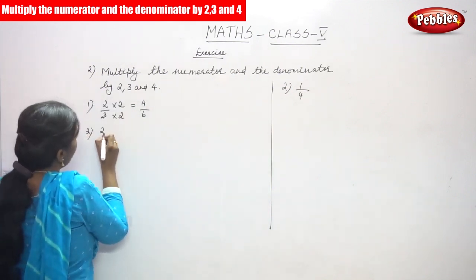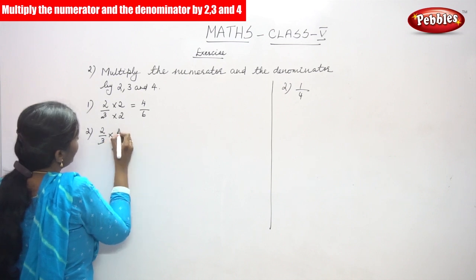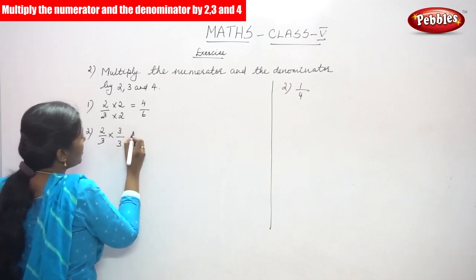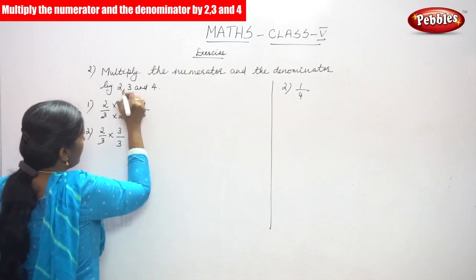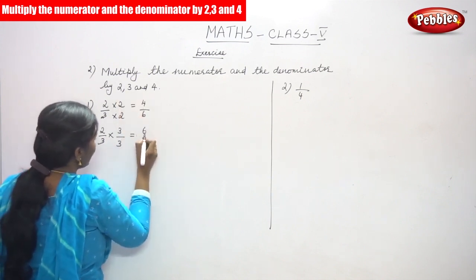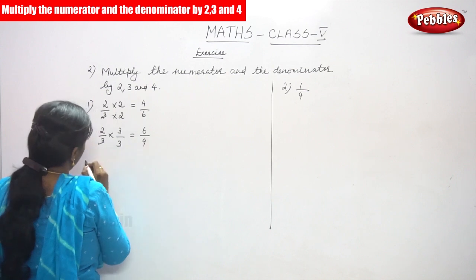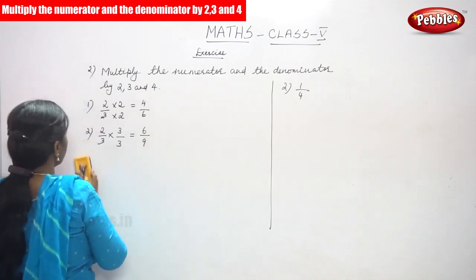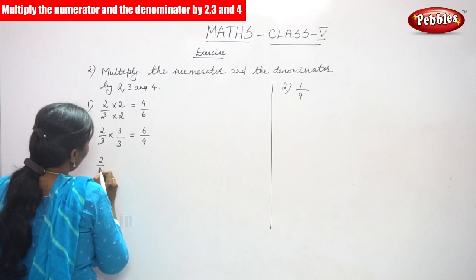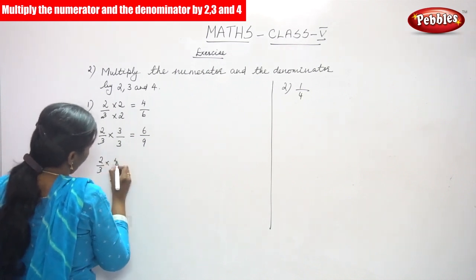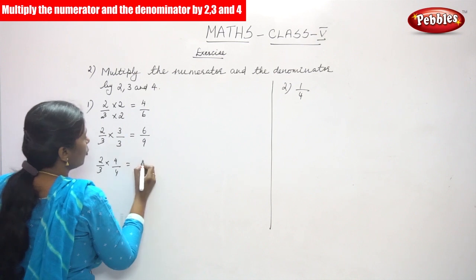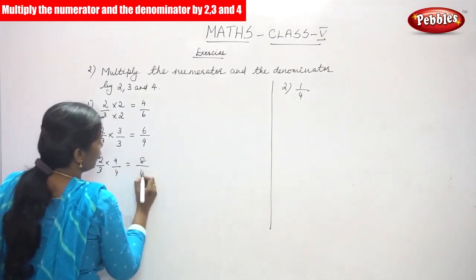Next, 2 by 3 is multiplied by 3. The numerator and the denominator are both multiplied by 3, so 2 into 3 gives 6 and 3 into 3 gives 9. Next, 2 by 3 into 4 by 4 — so 2 into 4 gives 8 and 3 into 4 gives 12.